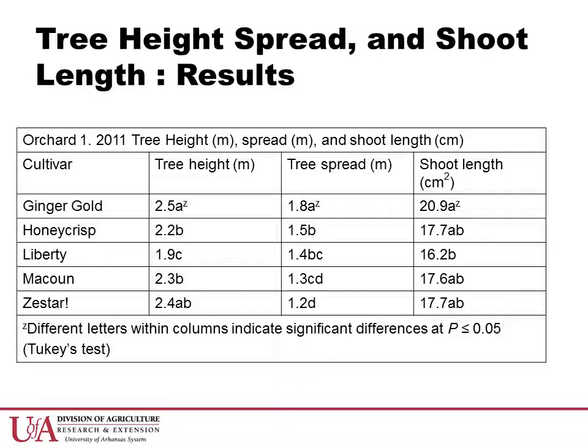Liberty trees were shorter in height than all cultivars, and shoot length was less than Ginger Gold, but did not separate statistically from Honeycrisp, McCowan, or Zestar.